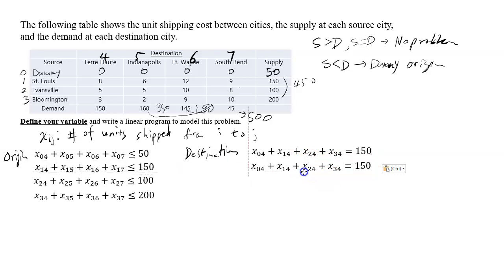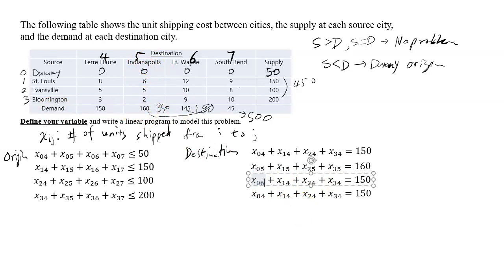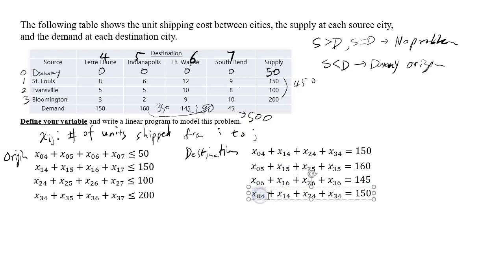You write similar equations for the other three destinations. The next one will be destination 5 — the sum of all shipments going to 5 has to add up to 160, which is the demand for Indianapolis. For destination 6 (Fort Wayne), the sum equals 145. For destination 7 (South Bend), the sum has to equal 45.